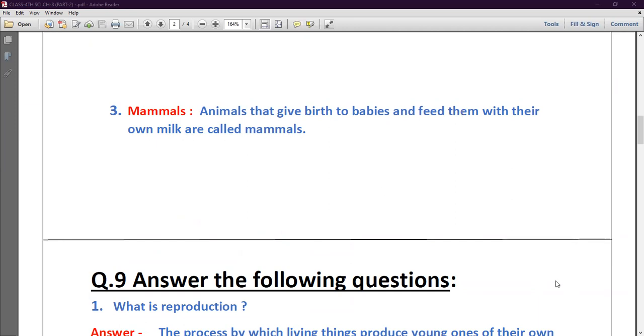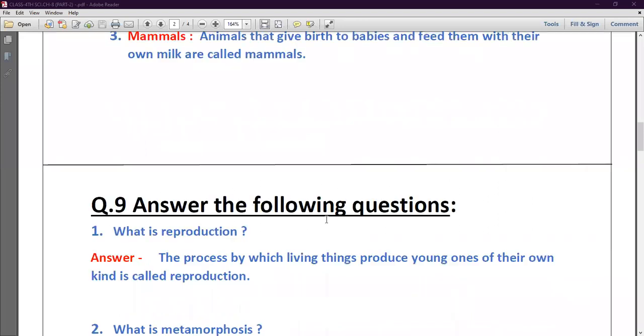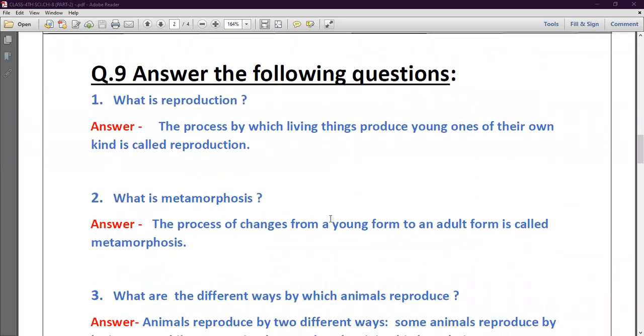Now next question number nine, that is question answer. First question is what is reproduction? So the process by which living things produce young ones of their own kind is called reproduction.